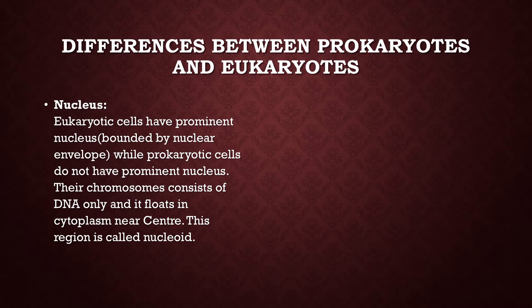Eukaryotic cells have chromosomes made up of DNA and protein, but prokaryotic cells have chromosomes made up of DNA only. This DNA floats in the cytoplasm near the center of the prokaryotic cell, and this region is called the nucleoid.